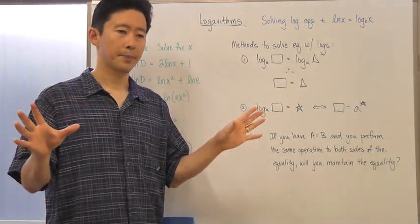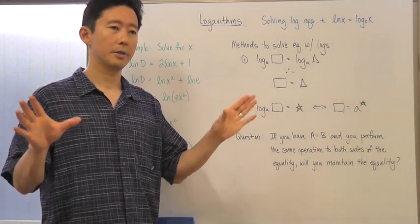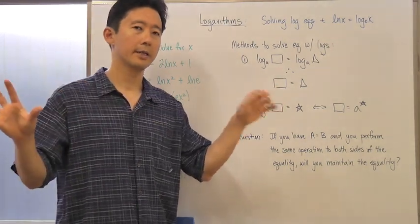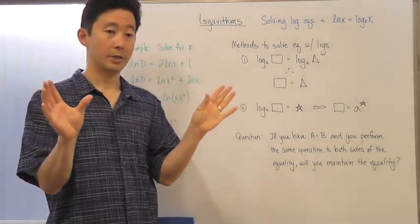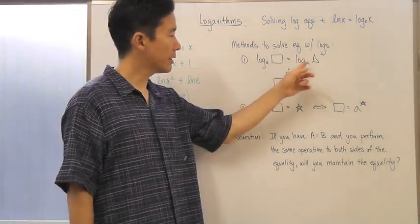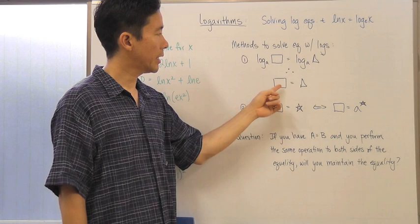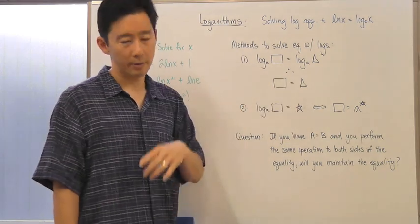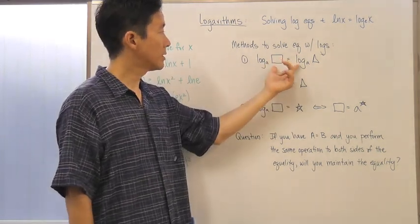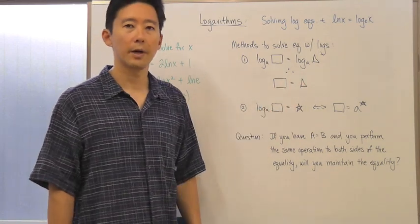And if that's the case, and then by using your rules or your laws of logarithms to simplify the left and the right hand side of the equation into one single logarithm, and you can compare it this way, then of course what you know is that all we need to do then is go ahead and compare the square and the triangle. Because if we know that if these two are equal, then of course these two have to be equal as well.